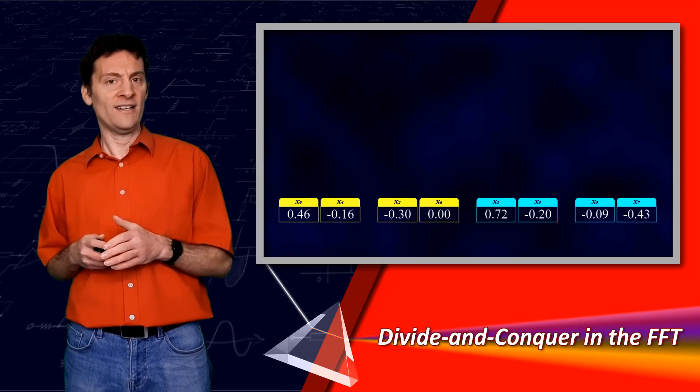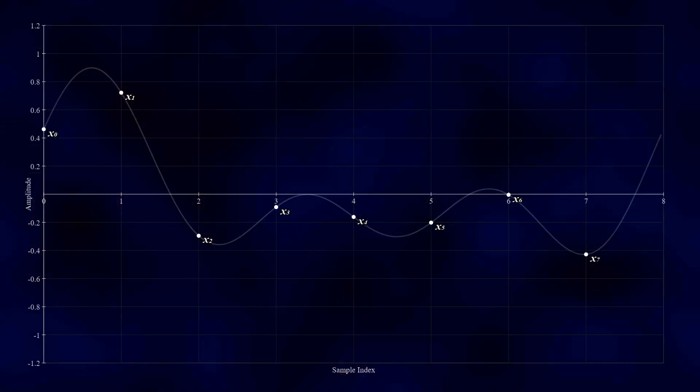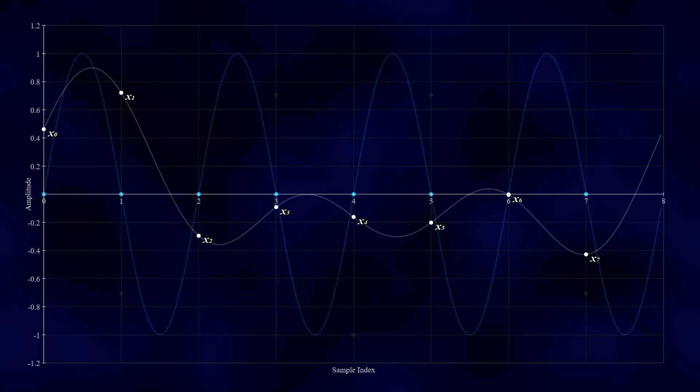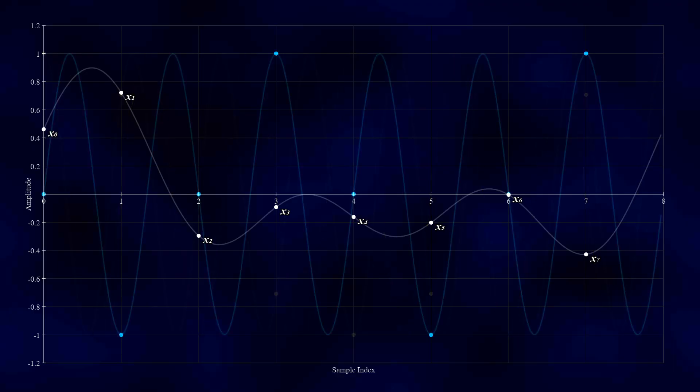We can clearly demonstrate this using our 8-sampled signal by examining how we begin calculating its DFT. Since we have 8 samples, the DFT will have 8 points, meaning we must multiply the signal by cosine and sine waves at each of the 8 sample points across 8 different frequencies, from index 0 to 7.